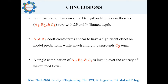In conclusion, both analyses show that for unsaturated flow cases, the Darcy-Forchheimer coefficients vary not only with the pressure difference across the media but also with the infiltrated depth into the media. In addition, the second analysis indicates that the A1 and B2 terms appear to have a significant effect in the Darcy-Forchheimer equation, while some uncertainty surrounds the C3 term. Finally, both analyses confirm that a single combination of the A1, B2, and C3 coefficients is indeed invalid over the entirety of an unsaturated flow problem.